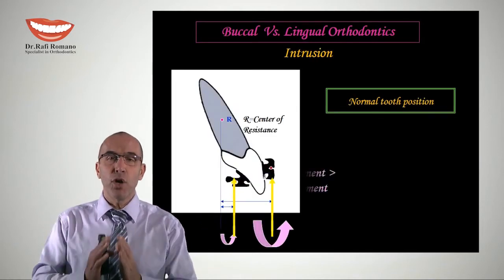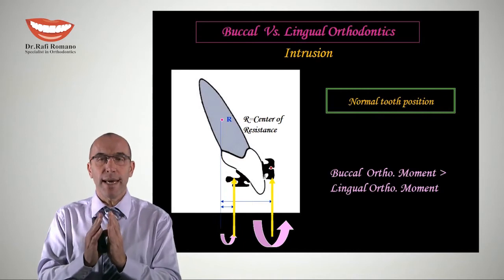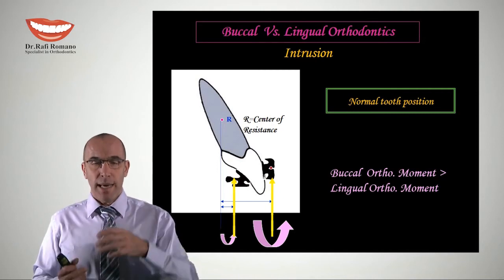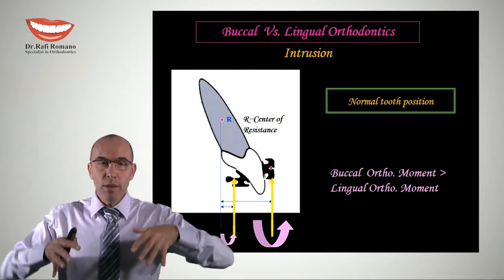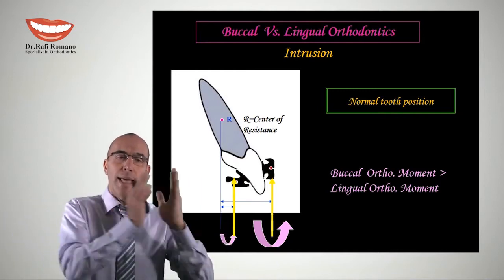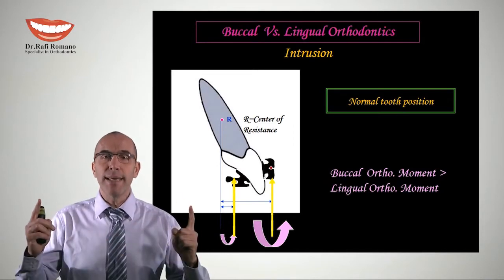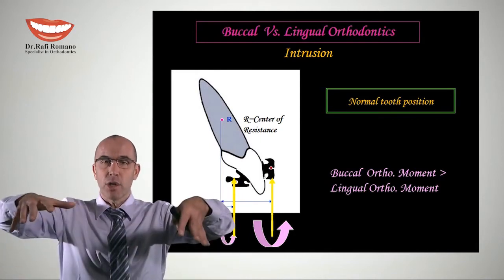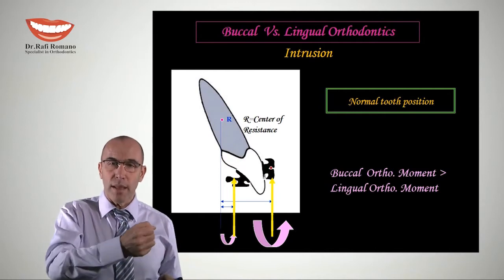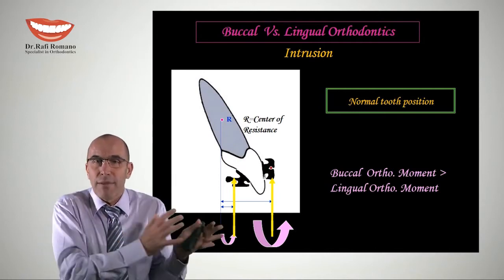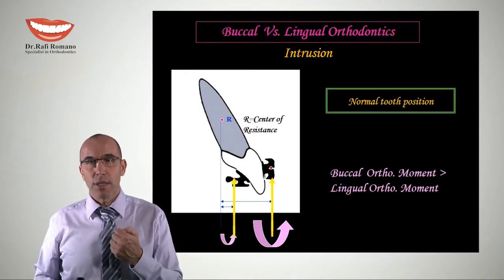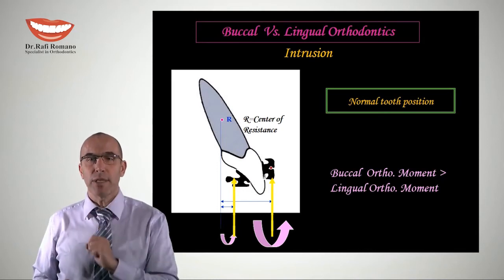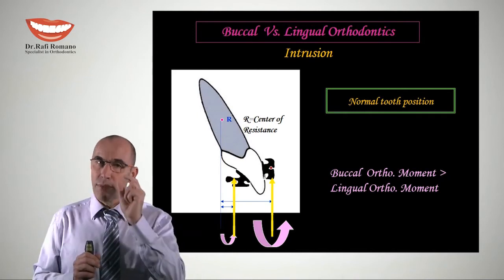Now let's talk about the vertical force — the intrusion force — and again compare buccal and lingual. When we have a buccal bracket and the patient bites on it, we normally get proclination, because the bracket is ahead of the center of resistance — there is a big gap. This is why in most crowded cases, after placing a wire, we get proclination. In lingual orthodontics, for a normal tooth position, the distance between the bracket and the center of resistance is very small, so the proclination moment is minimal.